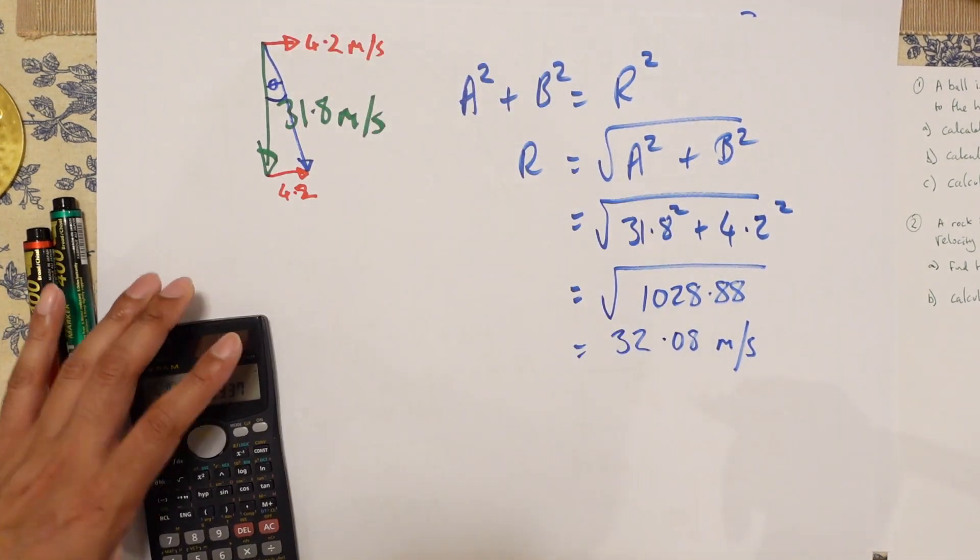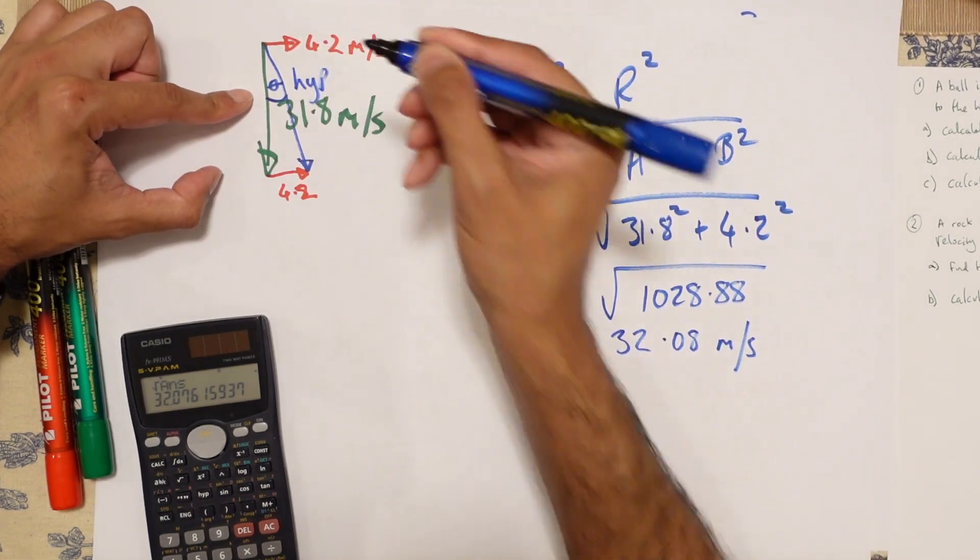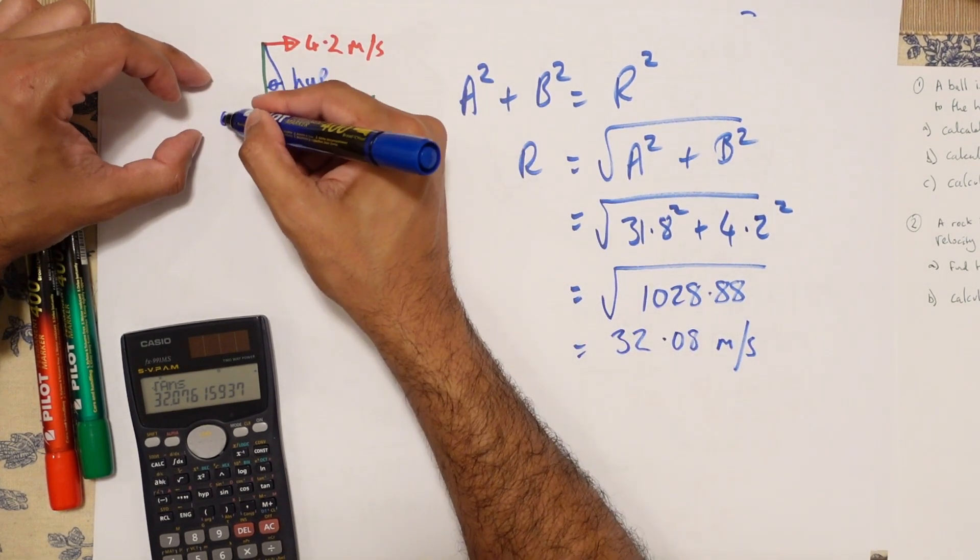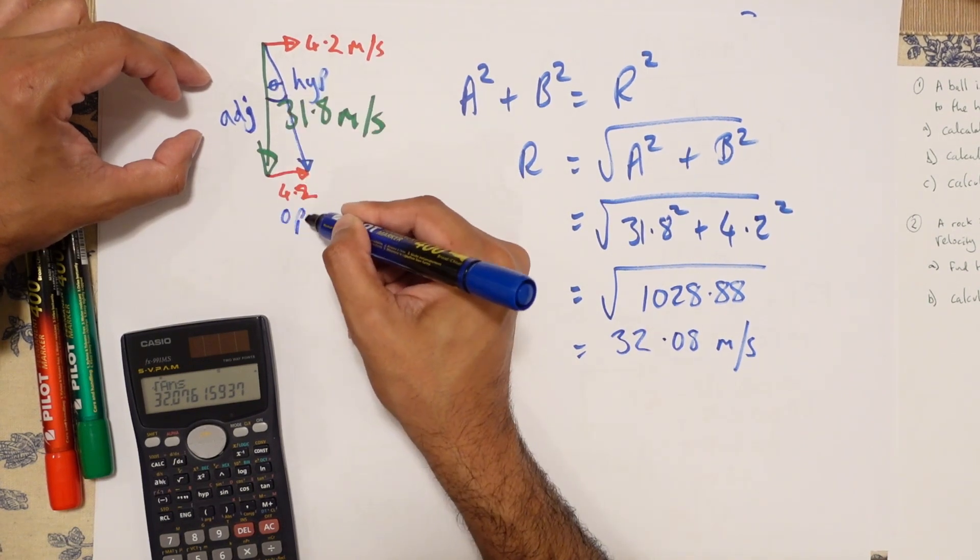And what do we have? Well, so this is the hypotenuse we just worked out. This one is going to be the adjacent.